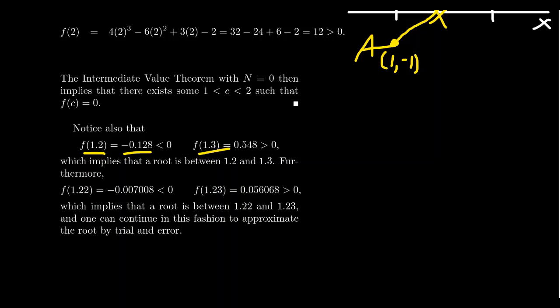Therefore, we can even do better, not just we knew there was a solution between 1 and 2, but now we actually know there's a solution between 1.2 and 1.3. We can also do better. If we take f(1.22), that's going to be -0.007008. And we could also do f(1.23), which is 0.056083, which is positive.